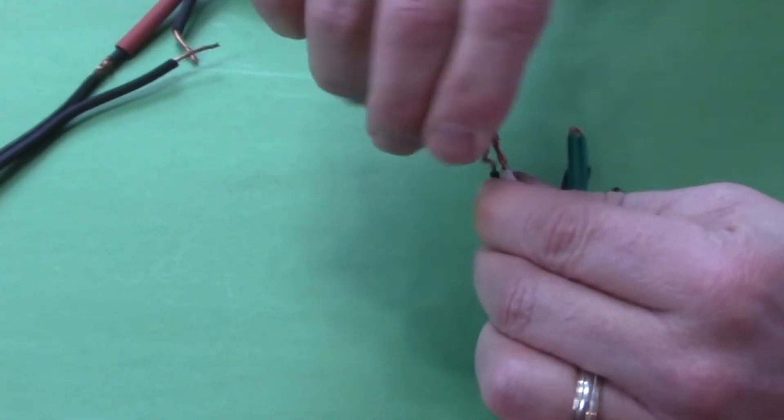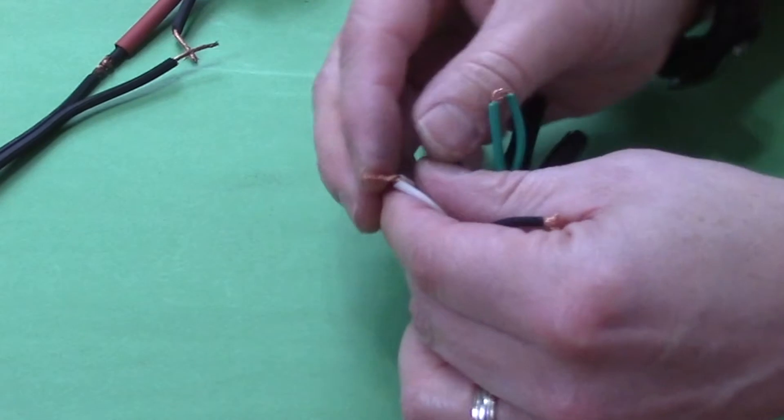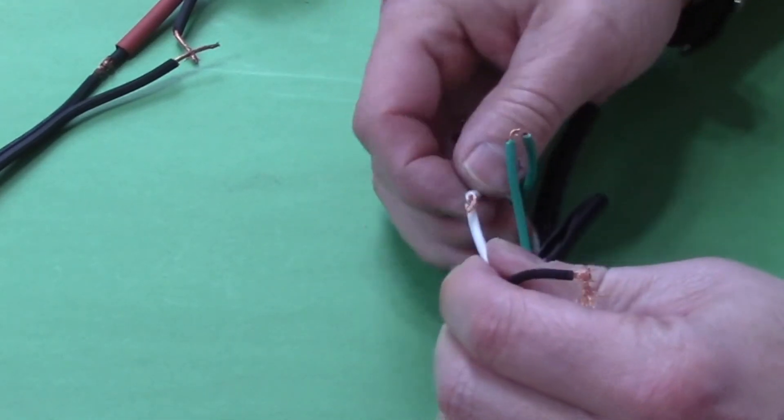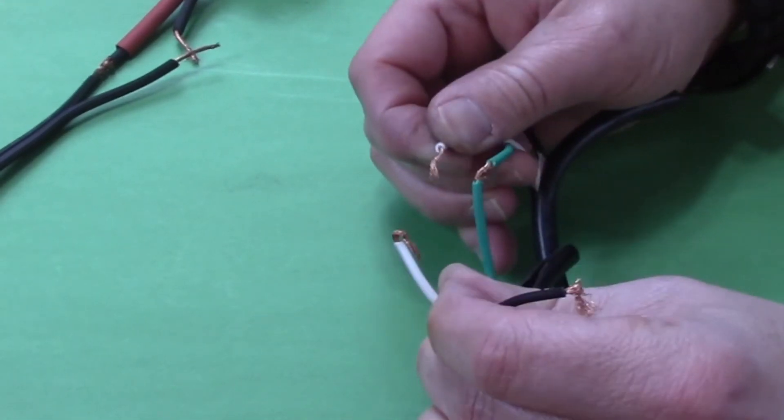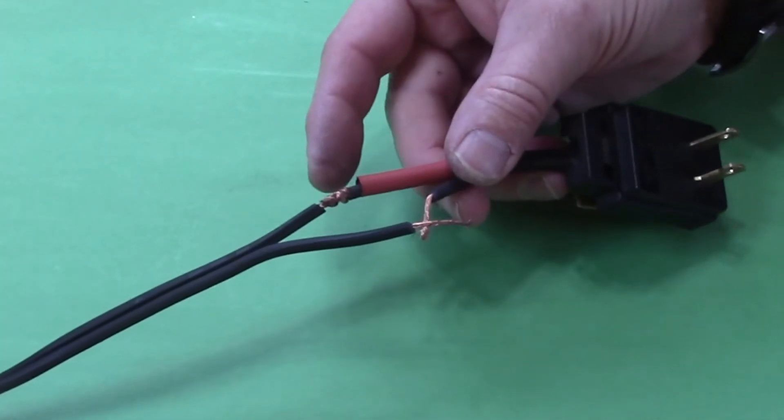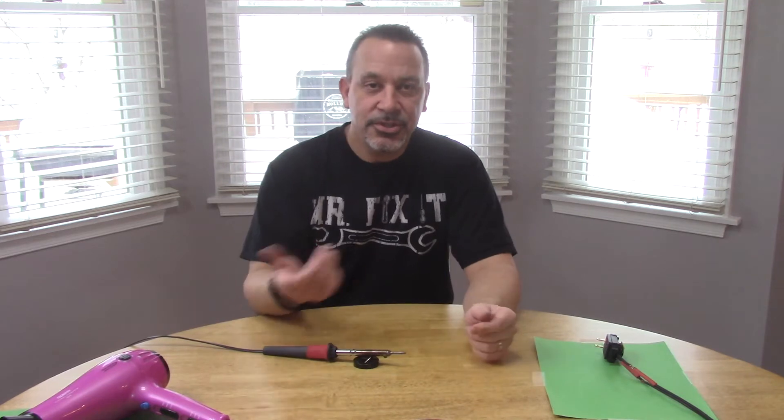Even if you twist it significantly and bend it over, any kind of pressure, it's going to pull right apart. If you wrap it like this with a bell wrap, it's not going to come apart. Like I said, you could just take that connection, tape it up and be done with it.